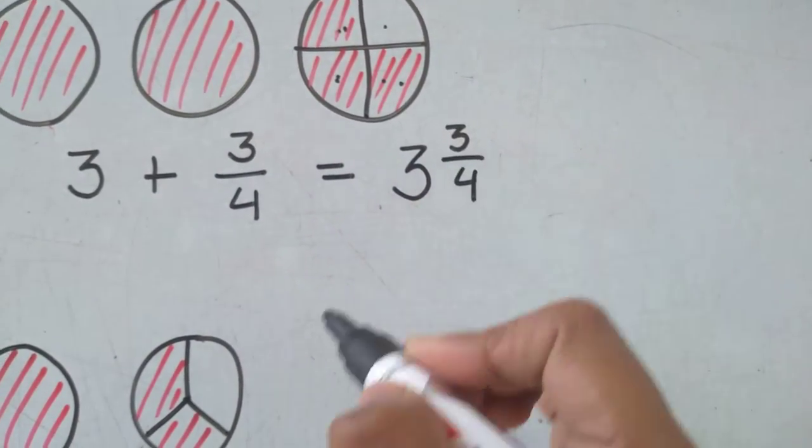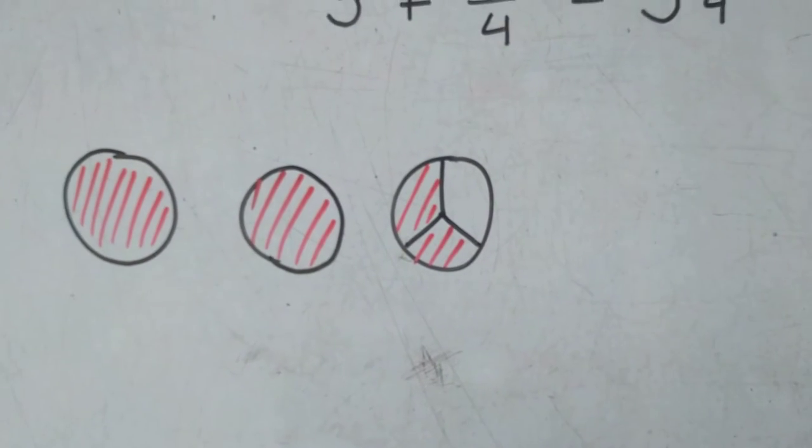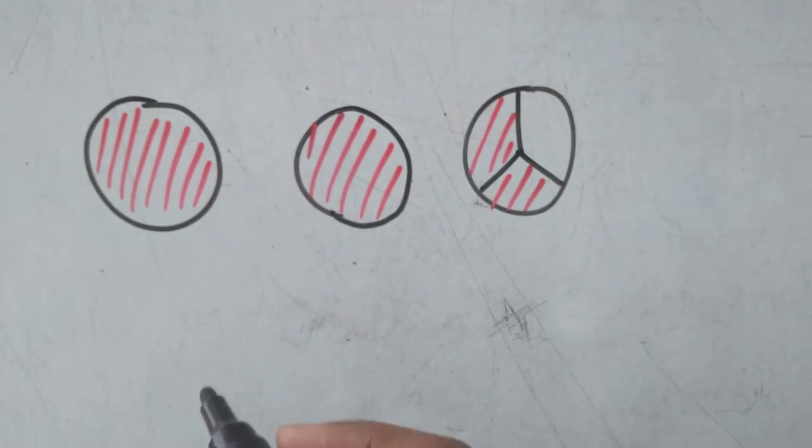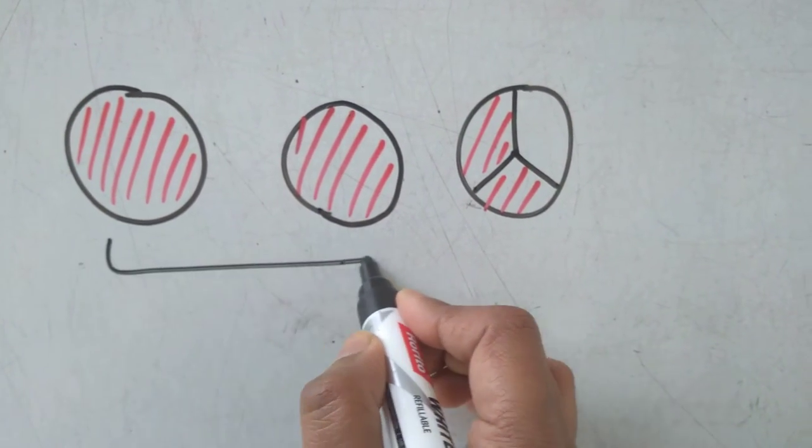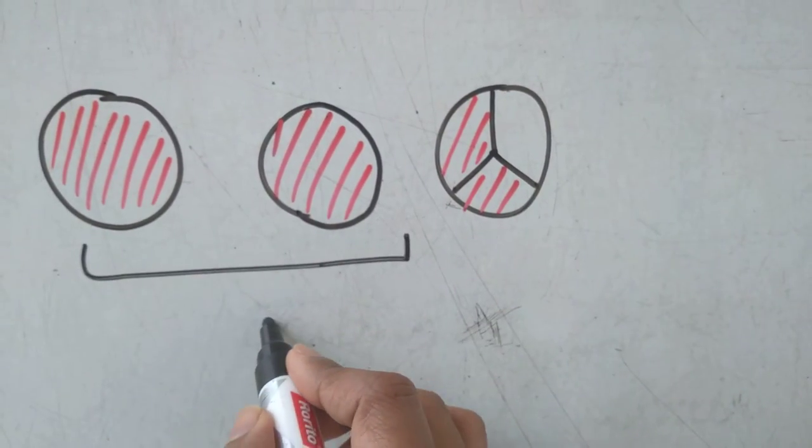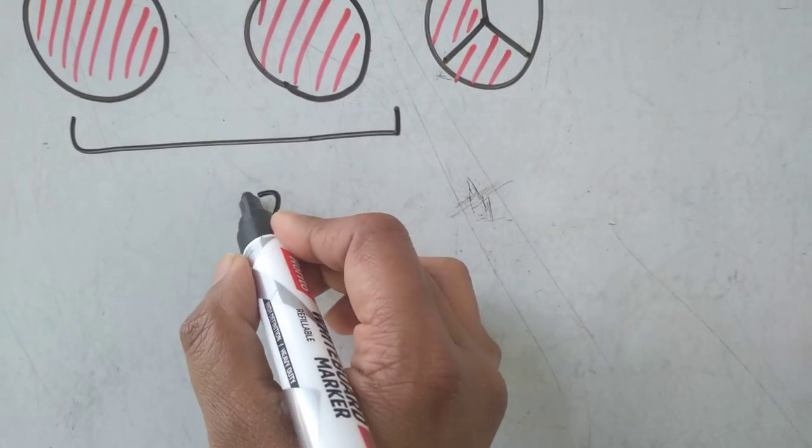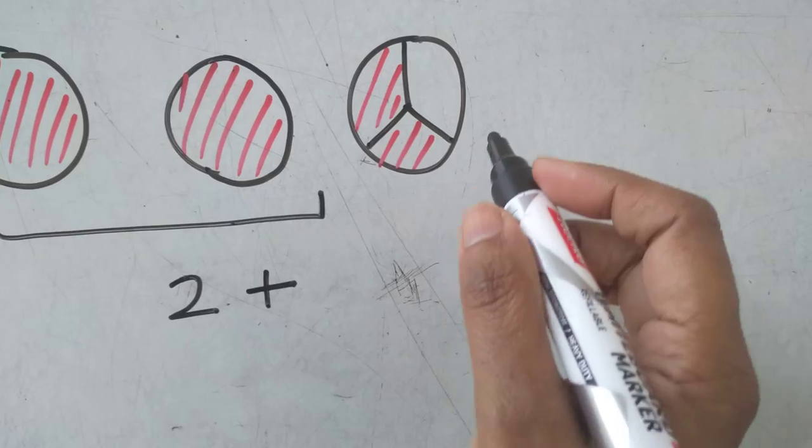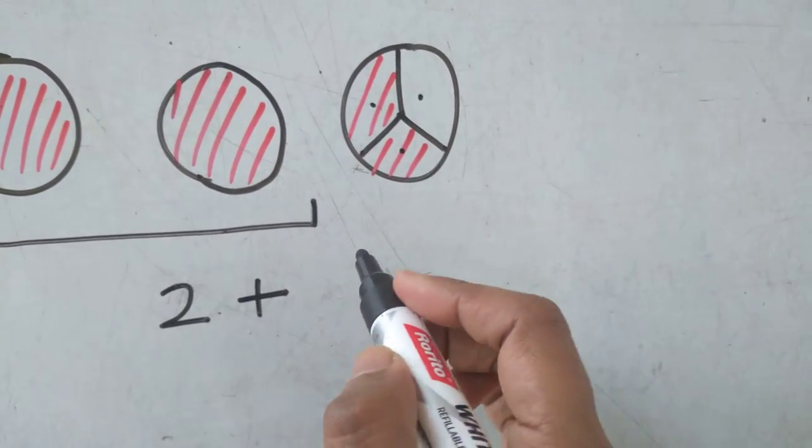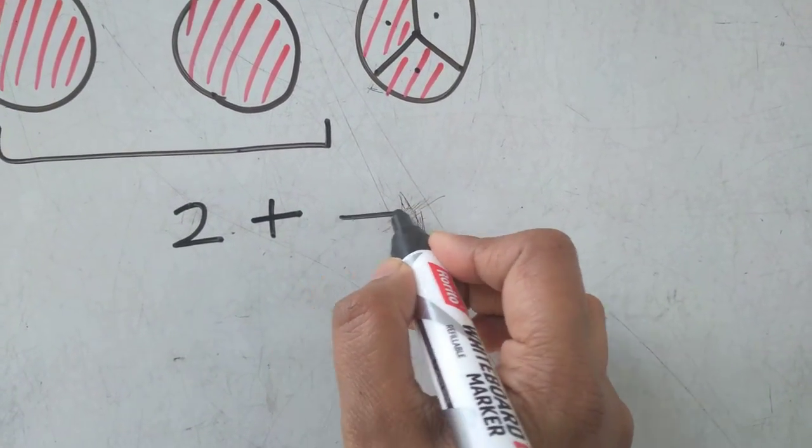Let's move to another one. Look at this figure. How many wholes can you see here? There are two wholes, so two. Two plus... this figure is divided into one, two, three equal parts, so three will be written as the denominator.